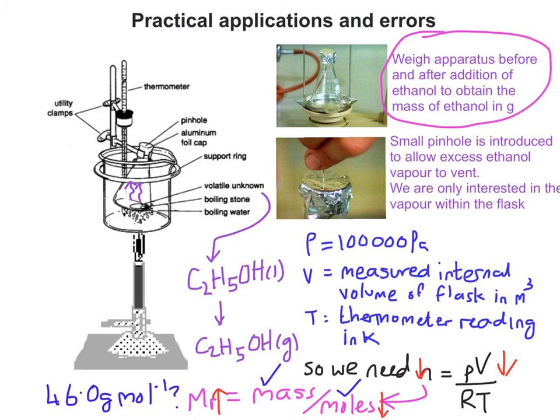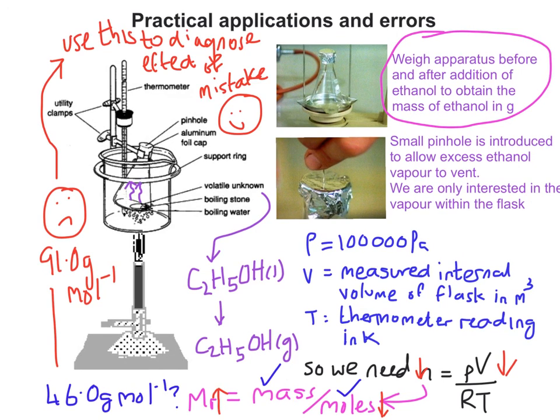What I found when I actually did that in reality in front of one of my classes is we got around 91 grams per mole, a massive increase. Obviously that's incorrect. It's more than double the actual MR. What we were able to do was to work out the error. In doing so, we were able to make a positive out of a negative.